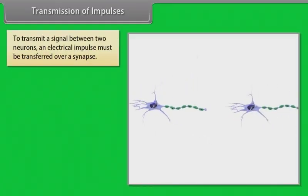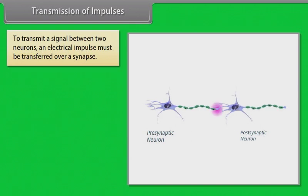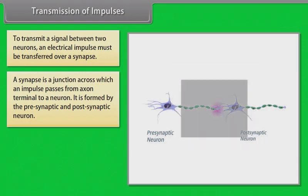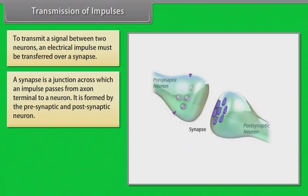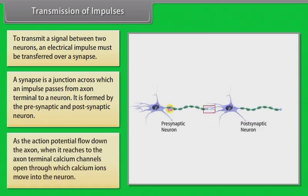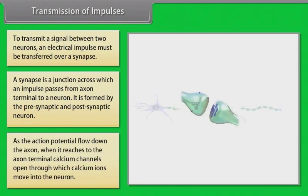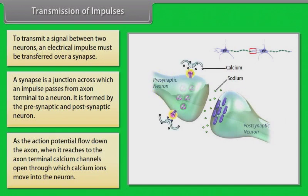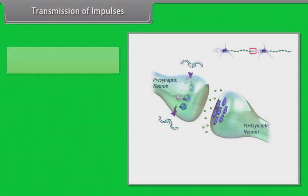To transmit a signal between two neurons, an electrical impulse must be transferred over a synapse. A synapse is a junction across which an impulse passes from an axon terminal to a neuron, formed by the pre-synaptic and post-synaptic neuron. As the action potential flows down the axon and reaches the axon terminal, calcium channels open and calcium ions move into the neuron.